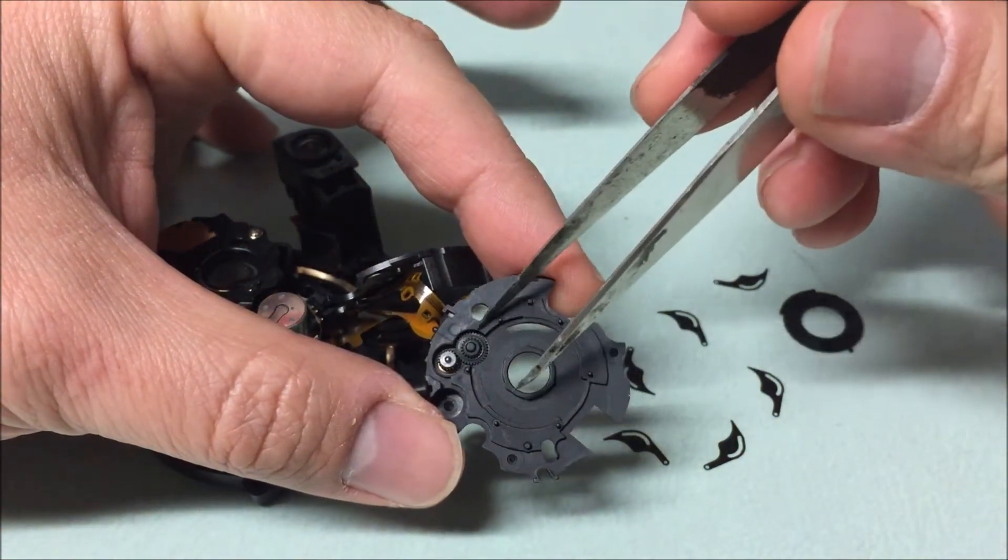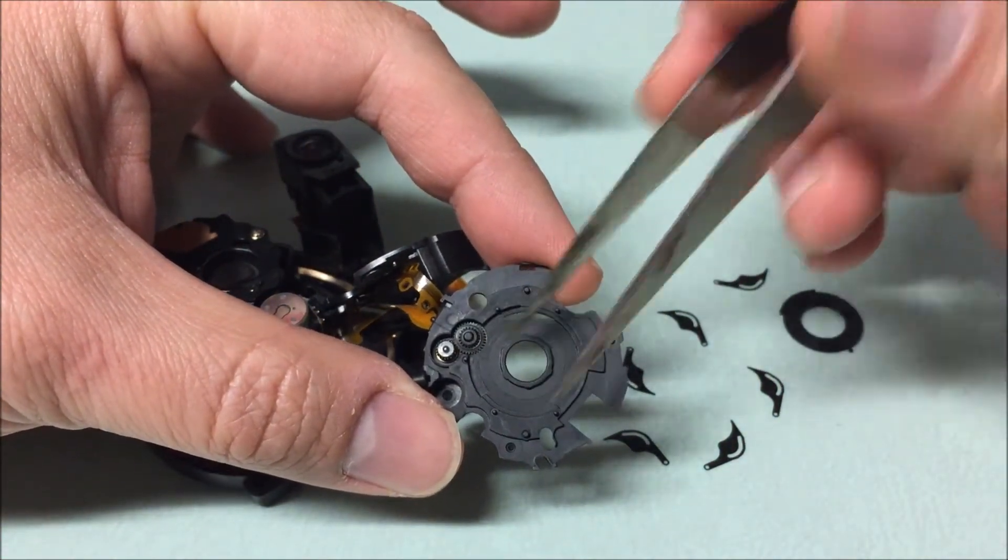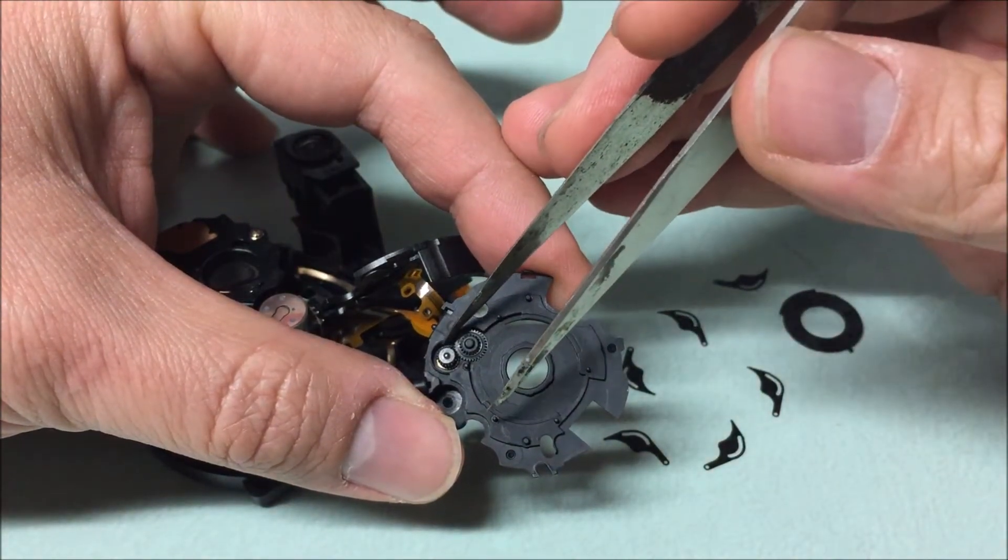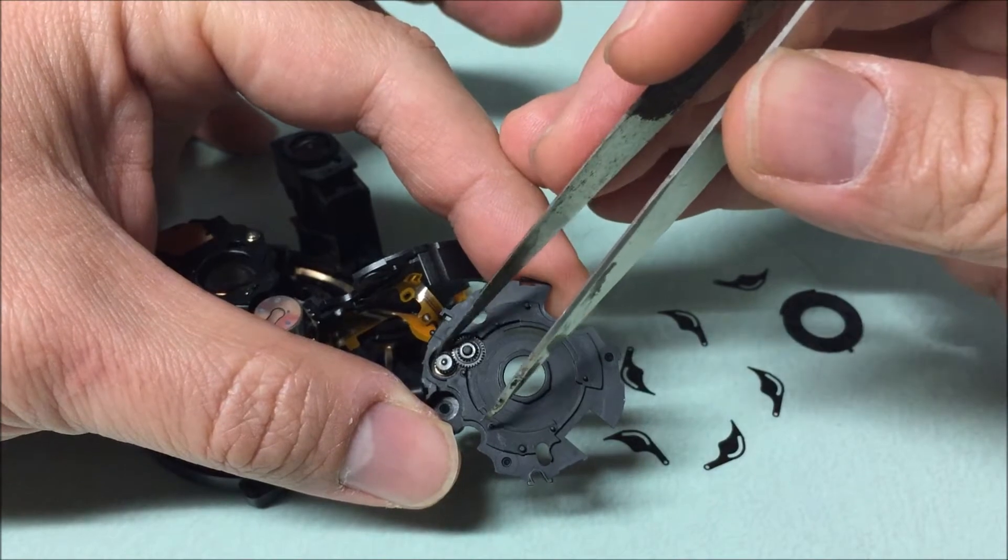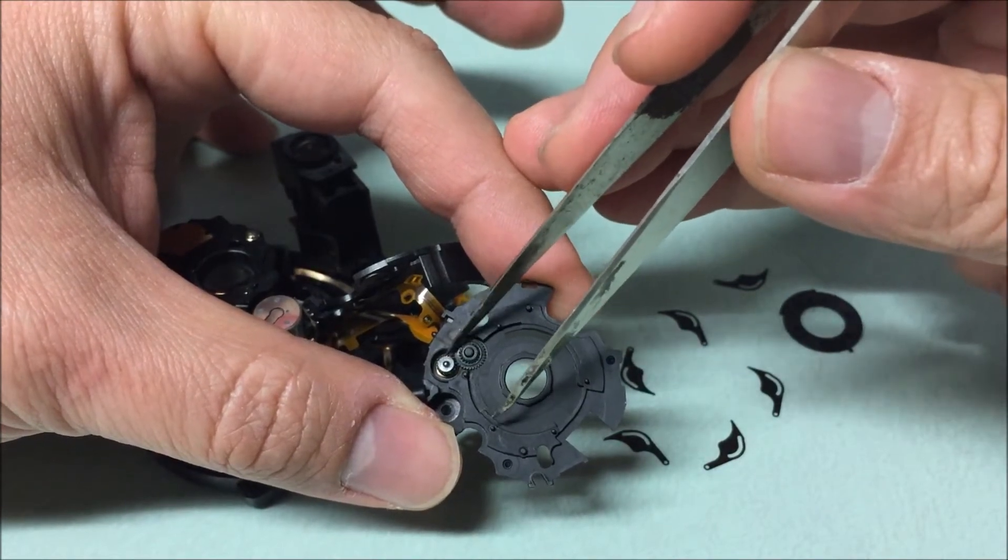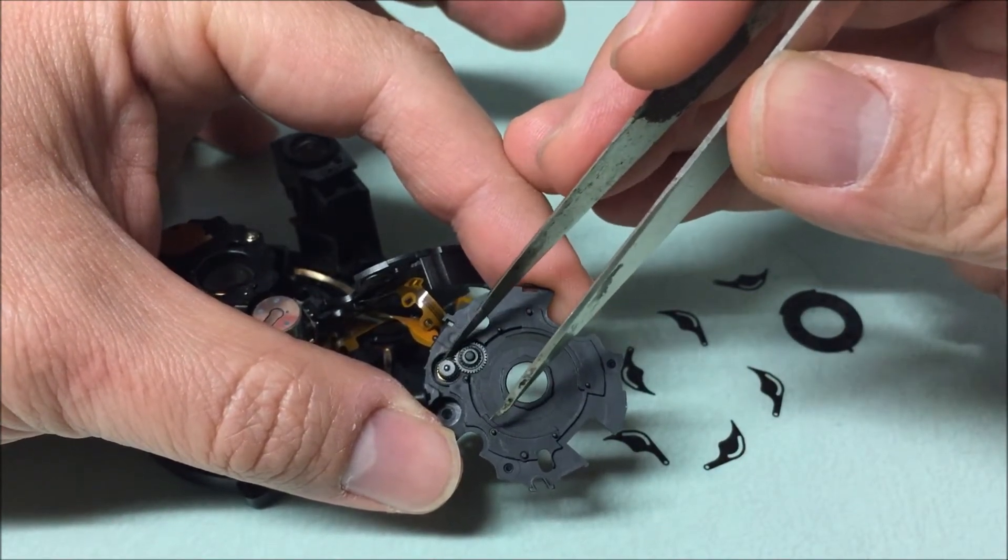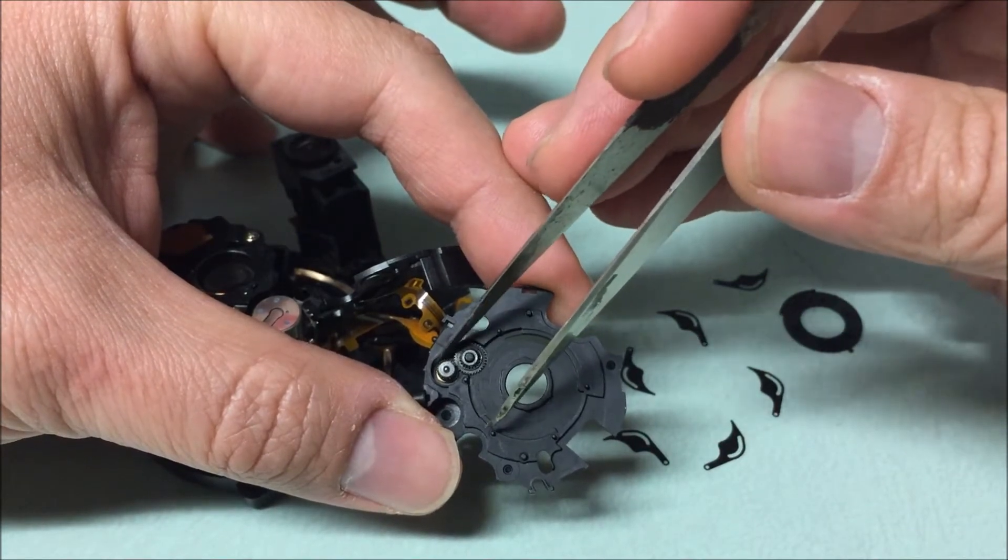You need to make sure there's no dirt or hair or anything on your gears, and you can spin the motor and make sure everything turns freely. Again, be careful not to damage your teeth. They are very small, fine teeth.